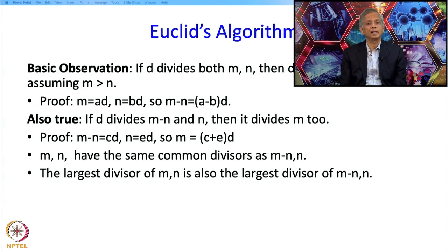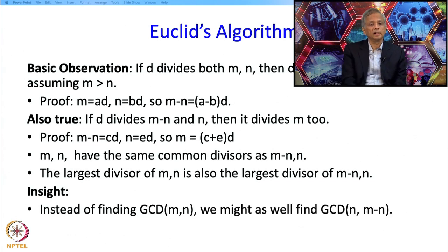Because if m-n had an even larger divisor, that would have to be a divisor of m, n. So that could not be larger than the largest divisor of m, n. So which means, and this is the big insight, is that instead of finding GCD of m, n we might as well find GCD of n and m-n.